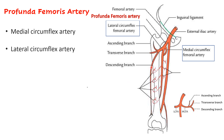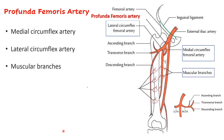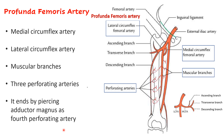The descending branch of the lateral circumflex femoral artery participates in the anastomosis around the knee joint. The third type are muscular branches given to the muscles of the various compartments of the thigh.